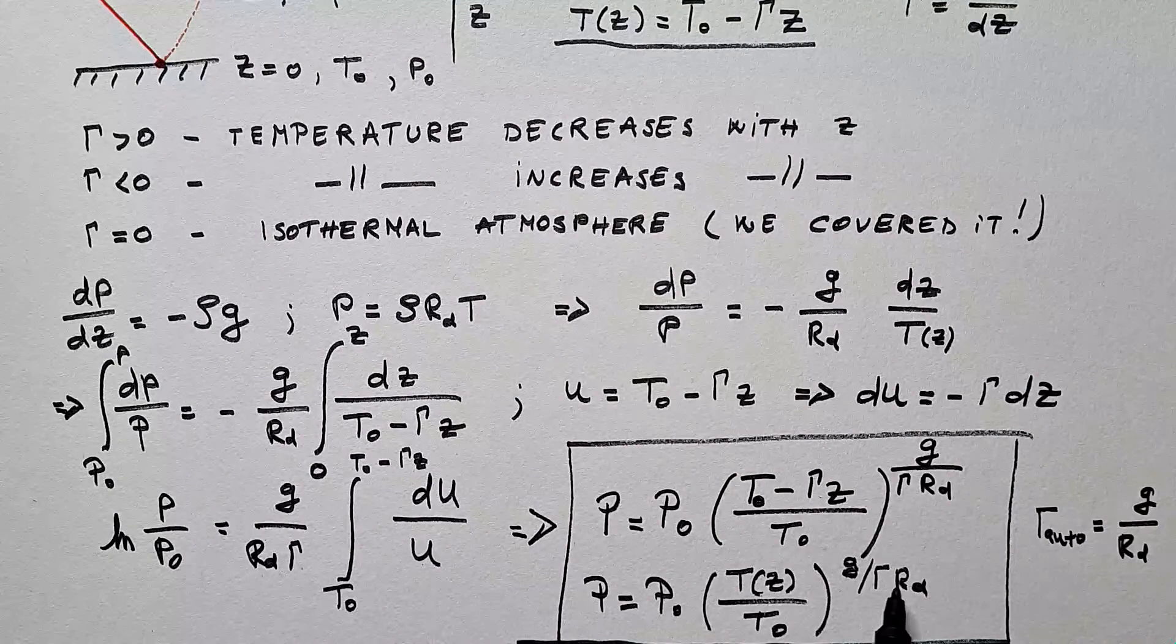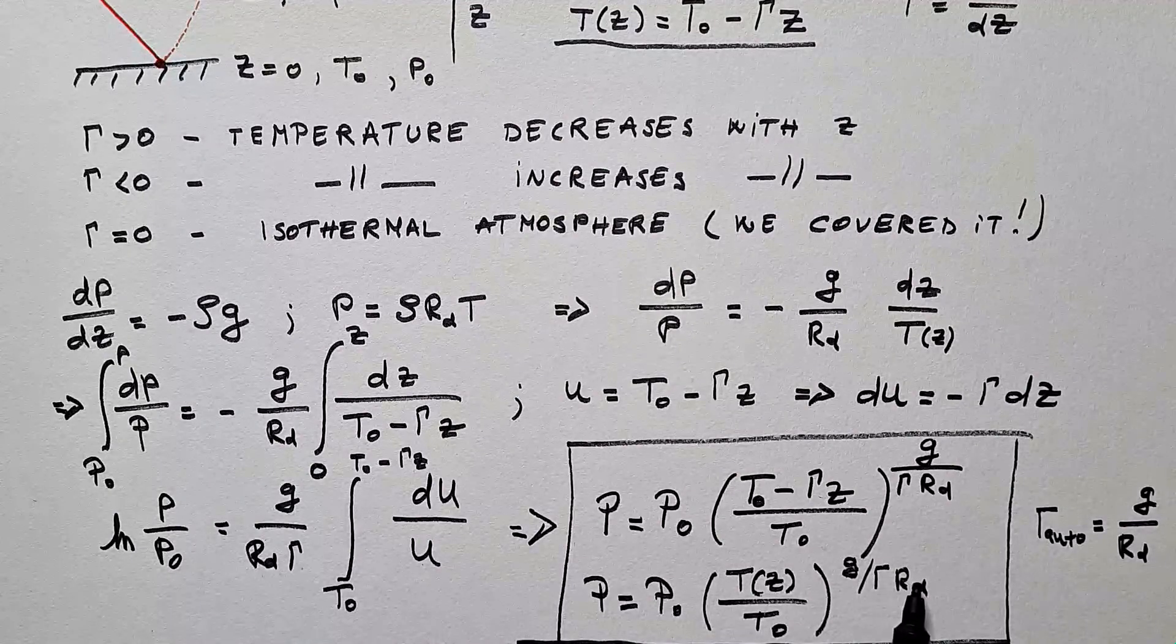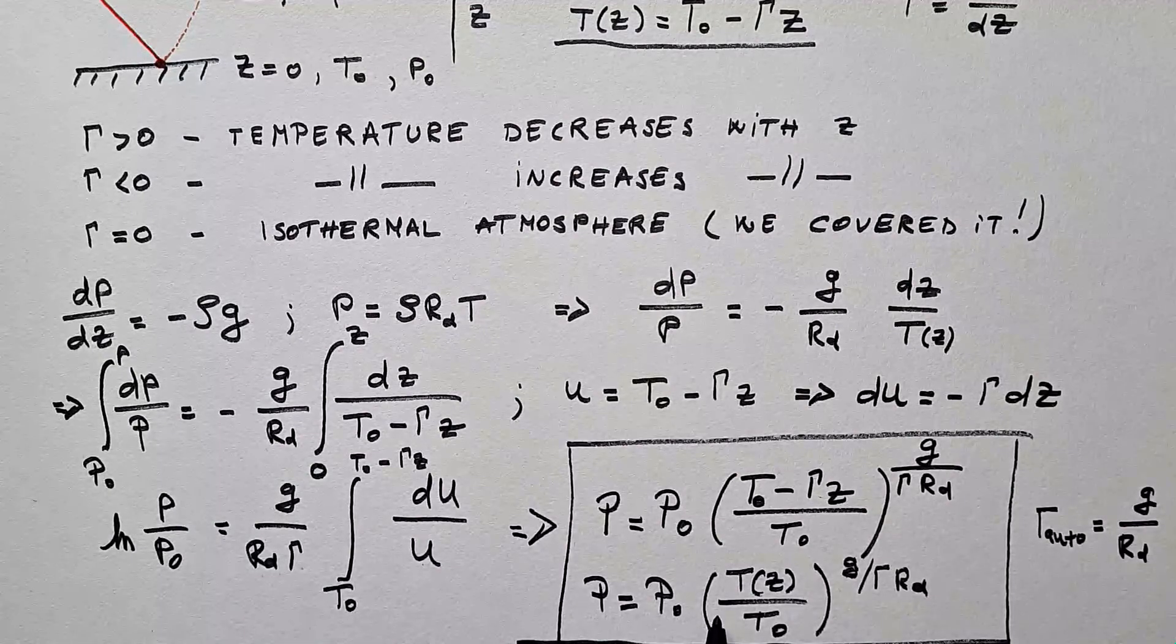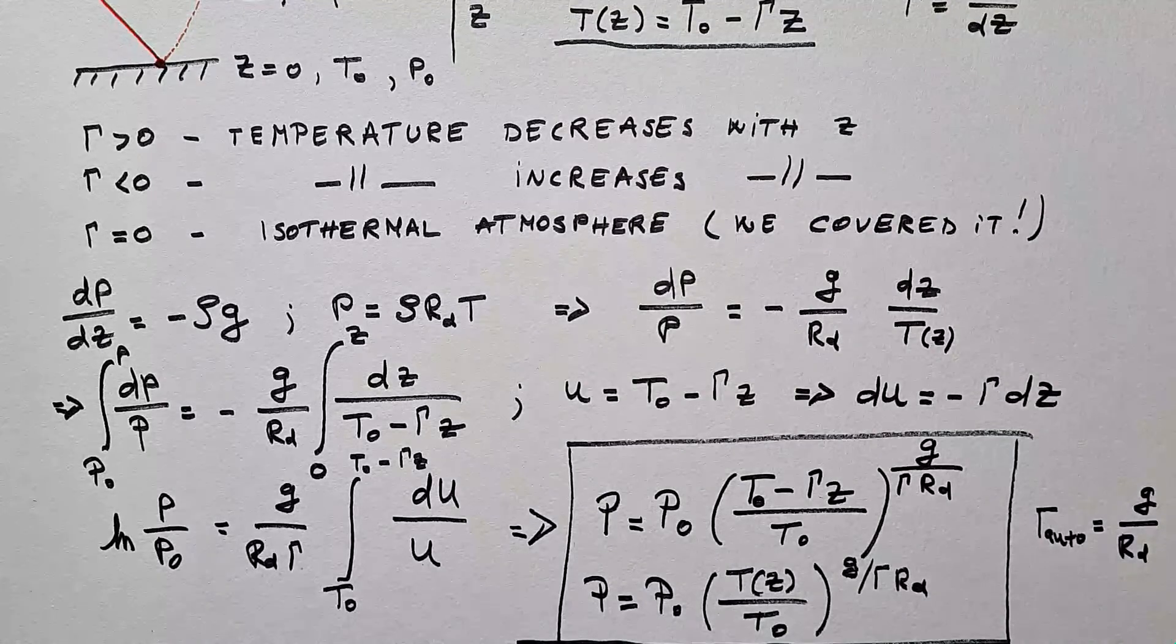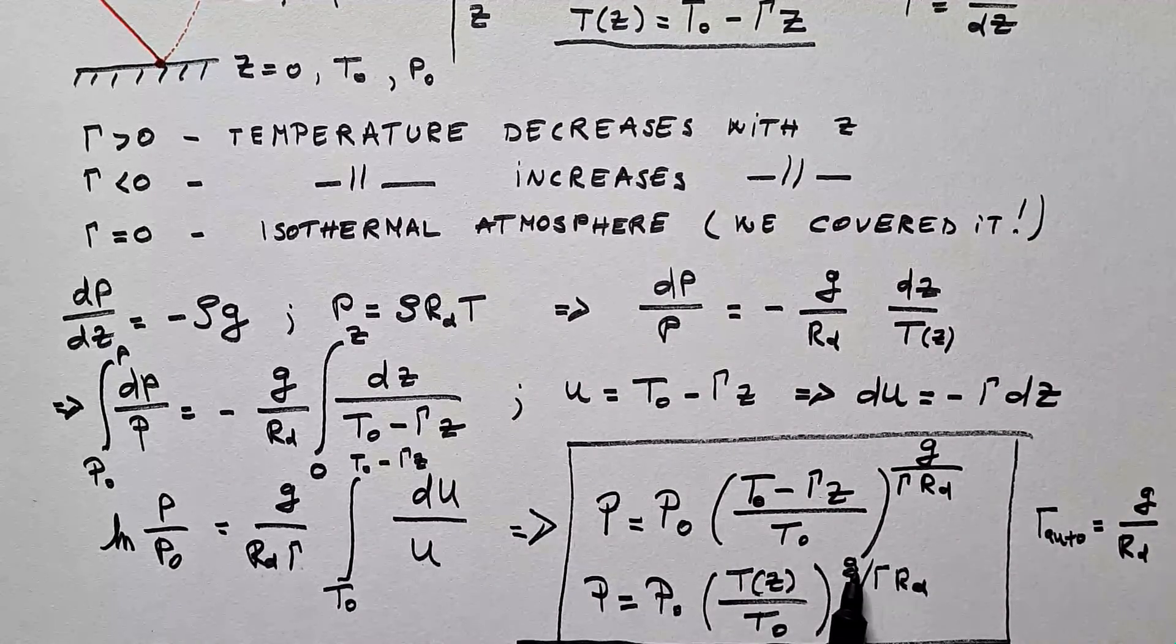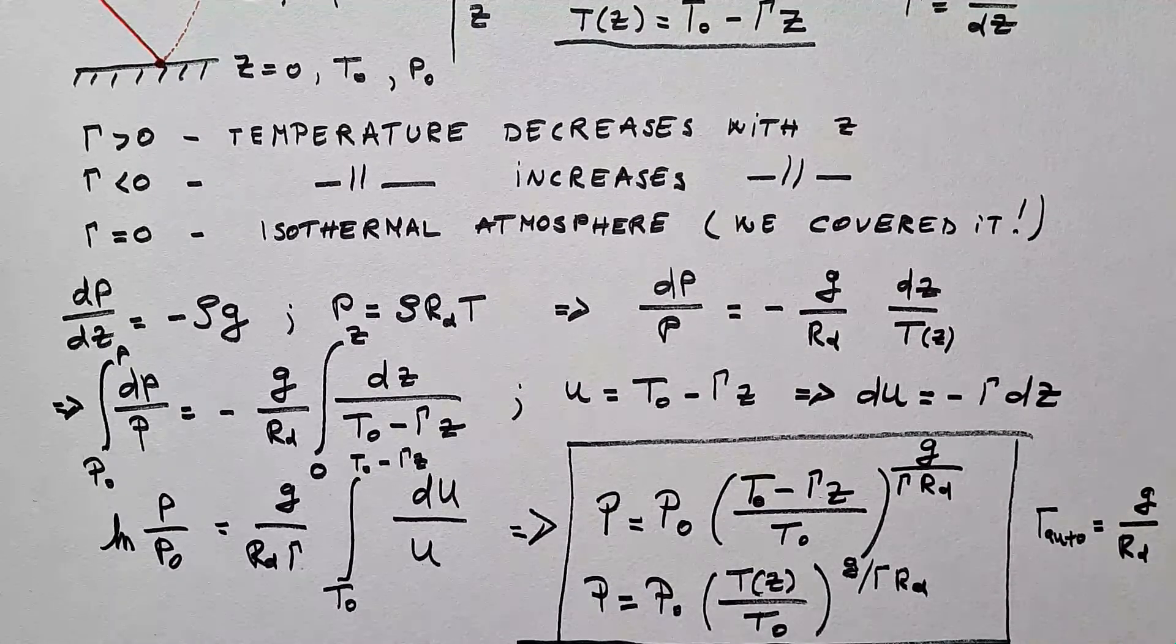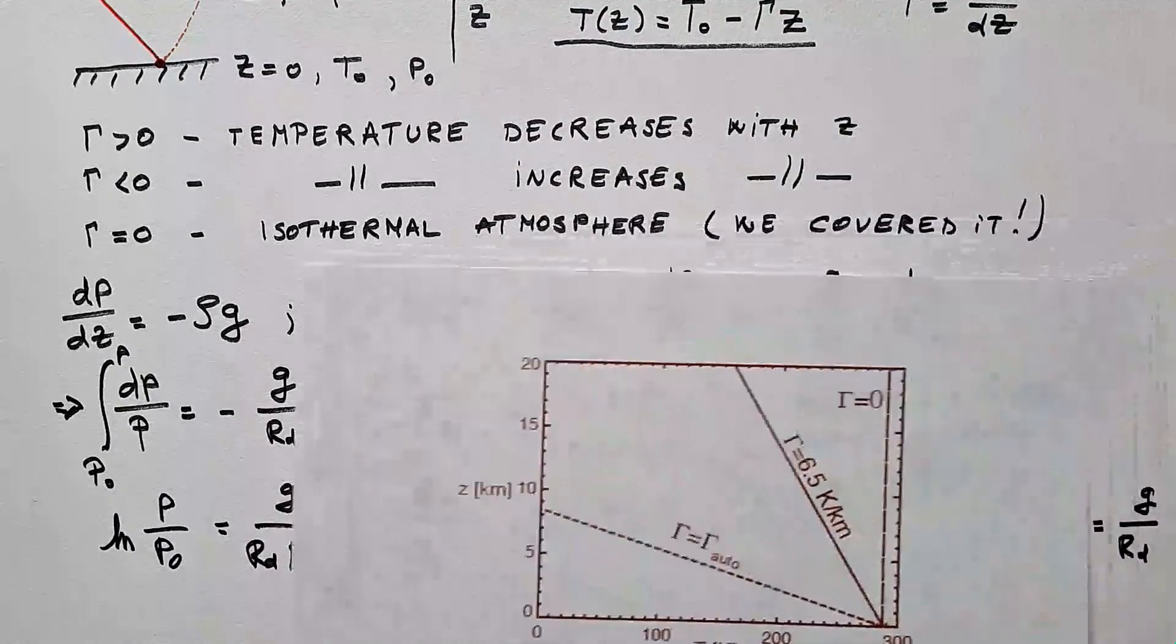And you can see that this γ_auto appears here. If γ is equal γ_auto, then pressure will linearly decrease with the height. You can work that out from this exponent over here. However